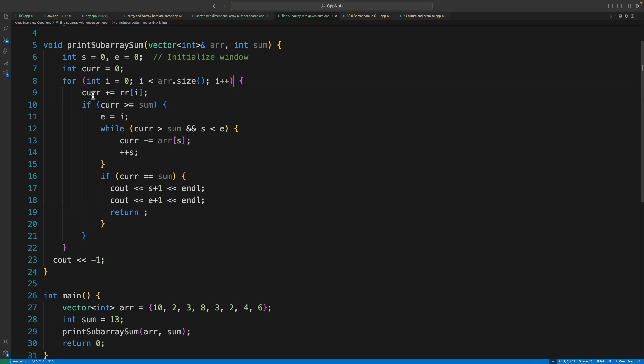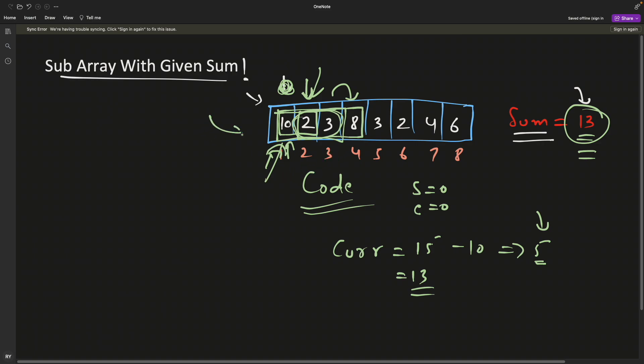If current is greater than or equal to sum, then only we'll do all these things. Otherwise, we'll just keep the starting index as one and just keep on adding to the current variable. So this is the best approach you can go for. This you can consider a sliding window problem.